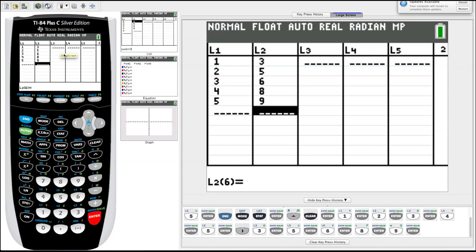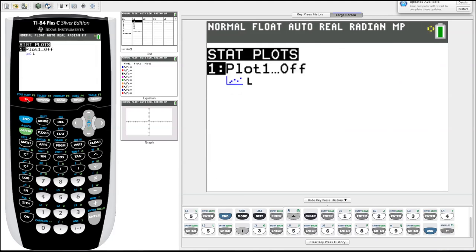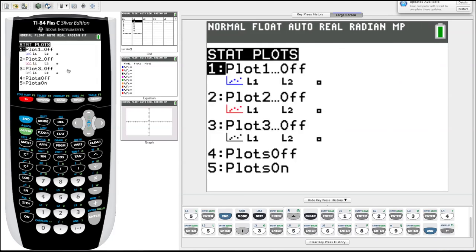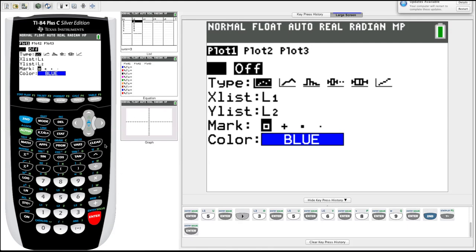The next thing we're going to want to do after we have some data is make maybe a scatter plot of it. So we hit our second key, go up to y equals. Notice that when you hit second, it should go to stat plot. We'll pick plot one, hit enter. We've got a few options here. First thing and most important thing is make sure you click the little on there because it's currently set to off. So now we turned our plot on.